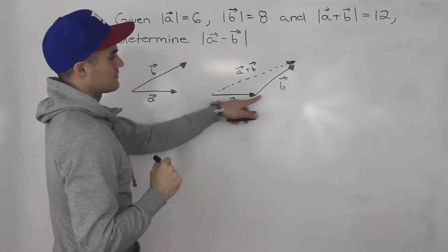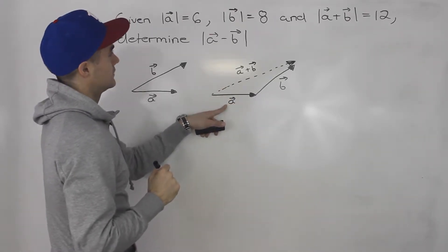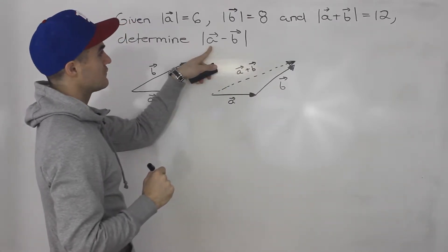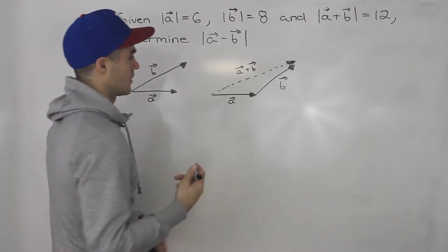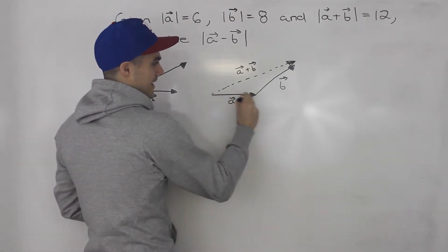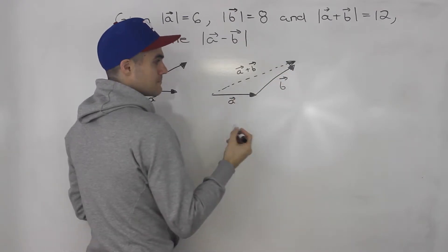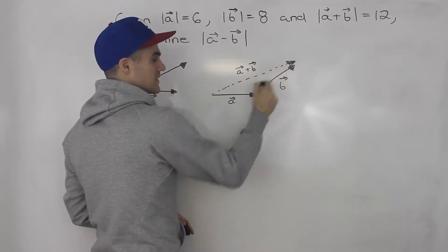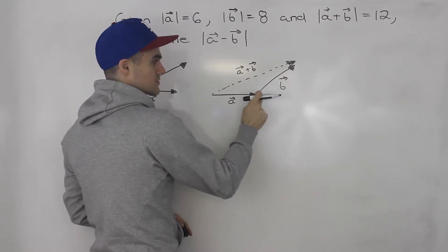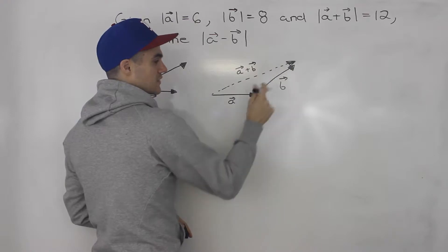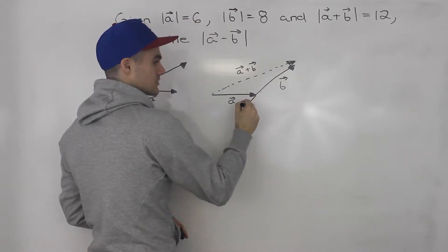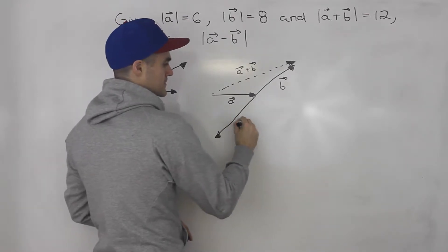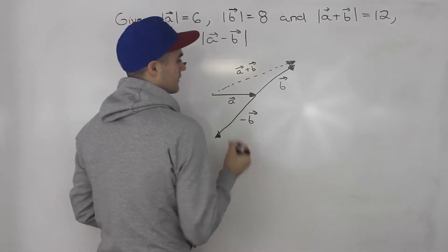Notice that we're given the magnitudes of all of these vectors: this magnitude is 6, this magnitude is 8, this magnitude is 12. And we have to find the magnitude of vector a minus b. If this is a plus b, then a minus b is going to be vector a, and then instead of plus b, we say minus b — the same magnitude as vector b, just in the opposite direction, like that.